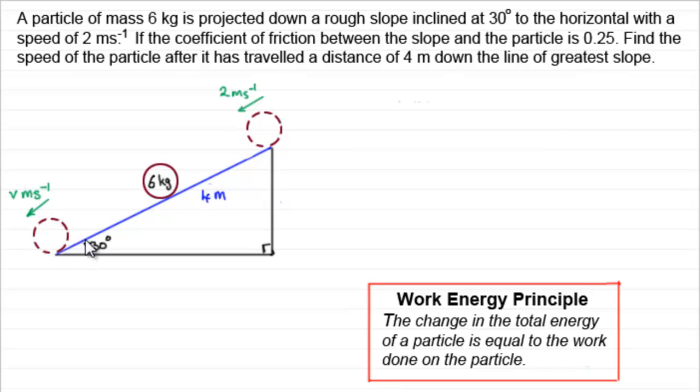Well, because it's a rough slope, first of all we ought to put some forces acting on this particle. So if we take it in its general sense here, somewhere in between the start and the finish, we've got the weight that acts downwards, that's going to be Mg or 6g Newtons. Normal contact force, that's going to be R Newtons. And we've got the frictional force acting back up the slope, opposing the direction of motion, and that would be F Newtons.